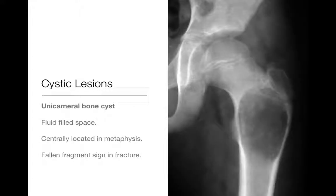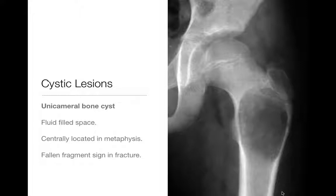Unicameral bone cysts are really just simple cysts. They're traditionally located in the metaphysis, are centrally located, and look very benign — either geographic 1a or 1b lesions. We see this geographic lytic lesion with a narrow zone of transition and non-sclerotic border centered in the metaphysis of the proximal femur in a child. If they fracture, you'll see the classic fallen fragment sign, which is pretty much pathognomonic for a unicameral bone cyst.